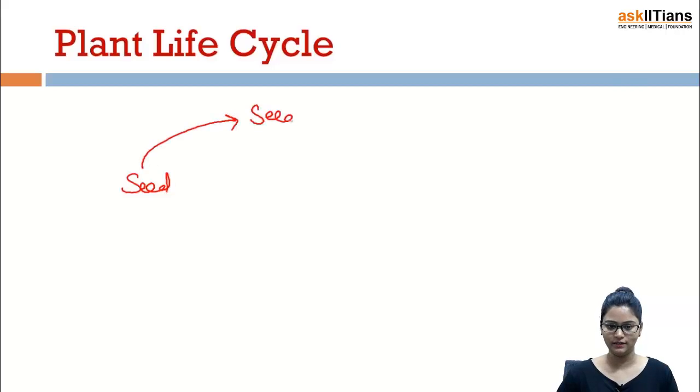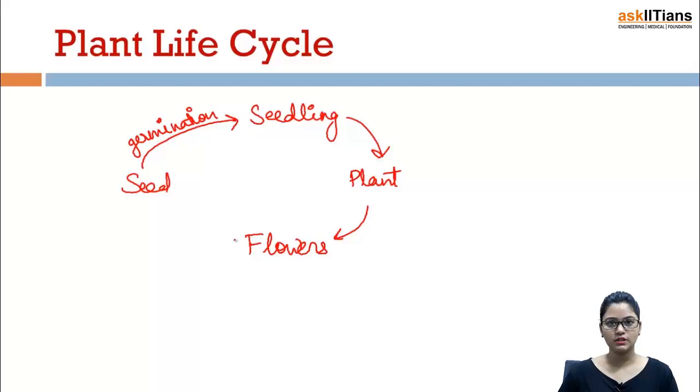And this seedling will in turn give rise to a plant. This plant will give flowers and after flowers what we get, we again in turn get seeds. So this is a life cycle in which we get the same things again and again. So this is a general plant life cycle.